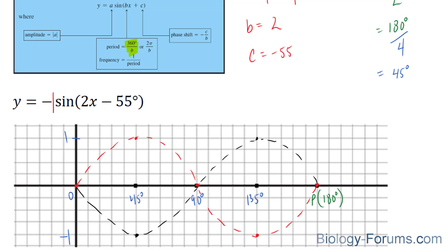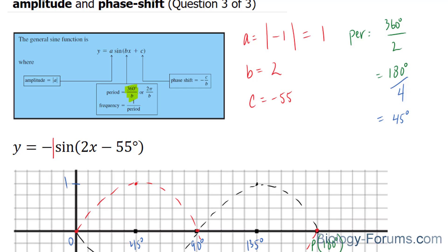Now, we still need to find the phase shift, and the phase shift can be found by using this formula. So I'll represent phase shift as PS, negative C over B. Our C value was determined as negative 55. Now, don't forget there's a negative that comes with the formula itself.